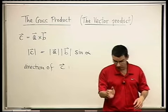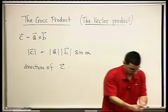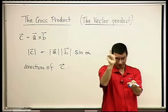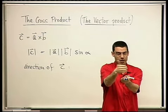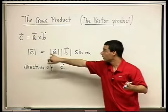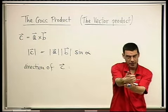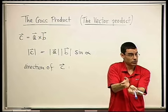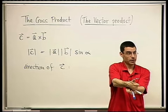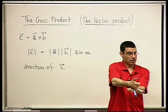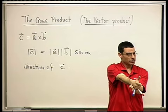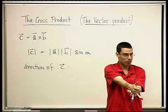Here are A and B — the blue one is A and the red one is B. You take your right hand — that's important — and you point your fingers from A to B. If you want to know the direction of C, your thumb is pointing that way. This is sometimes called the right-hand rule.